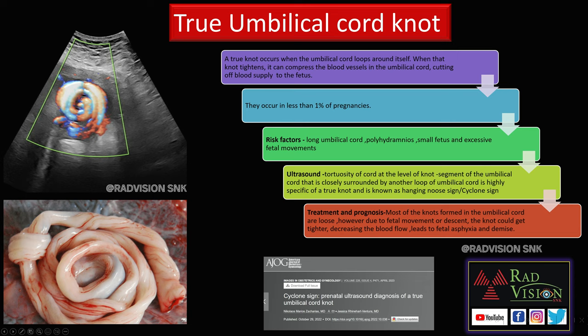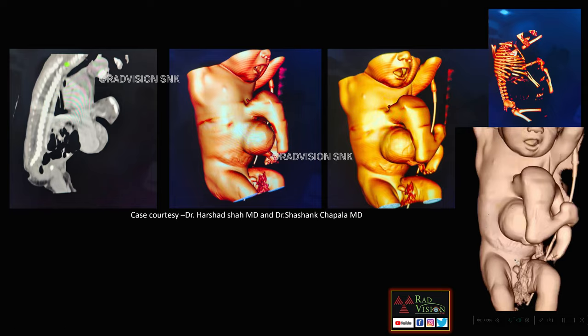A true umbilical cord knot occurs when the umbilical cord loops around itself; this occurs in less than one percent of pregnancies. Risk factors include a long umbilical cord, polyhydramnios, small fetus, and excessive fetal movements. There is tortuosity of the cord at the level of the knot, and the knotted segment is surrounded by another loop — depicted as the hanging noose sign or cyclone sign. If a true knot forms, it may lead to complete decrease in blood supply, asphyxia, or fetal death.